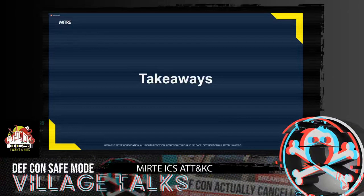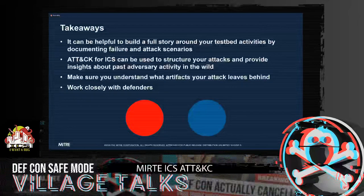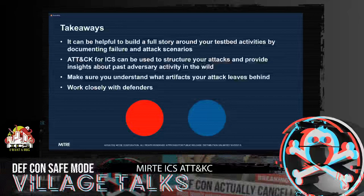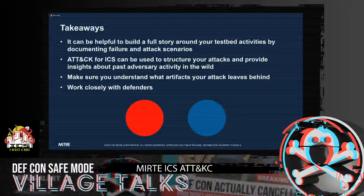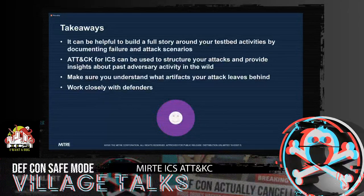Some key takeaways: it can be very helpful to build a full story around your testbed activities using documented failure and attack scenarios. Sometimes the reaction is just to hop on the testbed and see what happens — but structuring our activities using ATT&CK for ICS can really help communicate what we're doing. Those things are all reusable in the future. We also want to make sure we understand what artifacts we're leaving behind, and we want to work closely with vendors as purple teams.